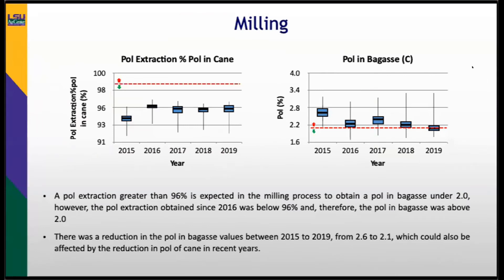The next unit process analyzed was the milling process. A pole extraction greater than 96% is expected to obtain pole in bagasse under two points. However, pole extraction since 2016 was below 96%, resulting in pole in bagasse of about two points. There was a reduction in pole in bagasse values from 2015 to 2019 — from 2.6 to 2.1 — which could also be affected by the reduction in pole of cane in recent years.